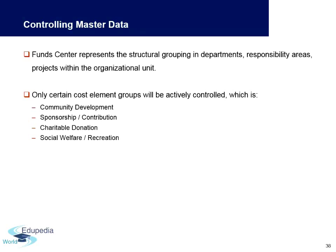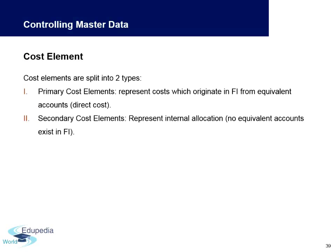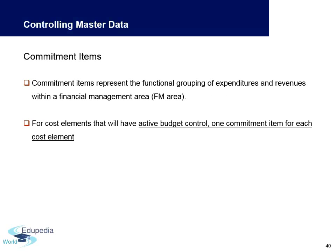Fund centers represent structural groupings of departments, responsibility areas, and projects within an organization. Only certain cost element groups are activated — for example, community development, sponsorship, or charitable donations. There are two types of cost elements: primary cost elements, which originate in finance from equivalent accounts, linking finance and controlling; and secondary cost elements, which only handle internal allocation and have no connection with finance.